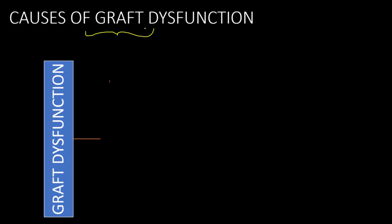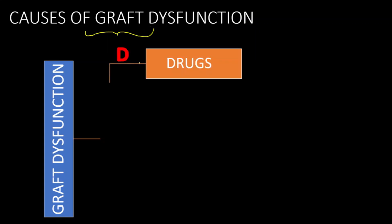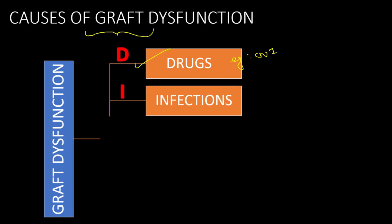If we see the causes of graft dysfunction, first it could be due to drugs. For example, CNI (calcineurin inhibitors) can cause graft dysfunction, or any other drug can cause graft dysfunction — that you have to be aware of.